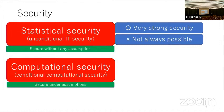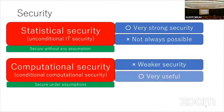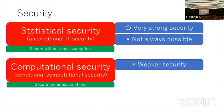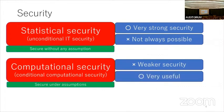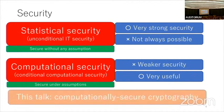That's why we study computational security. Of course, computational security is weaker because we make some assumption, and if this assumption is broken, then security is also broken. But on the other hand, it is very useful, since many functionalities are possible based on computational security. In this talk, I focus on computationally secure cryptography.